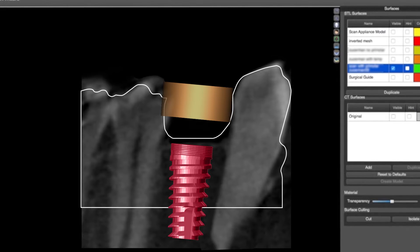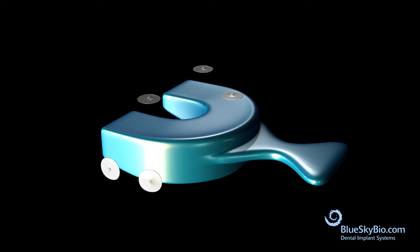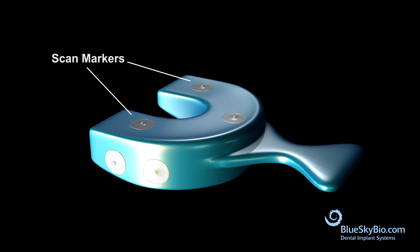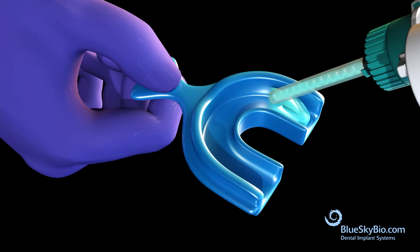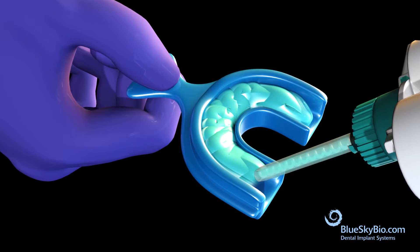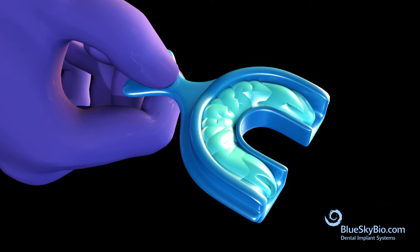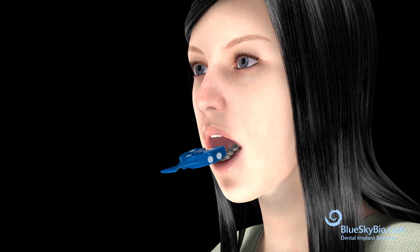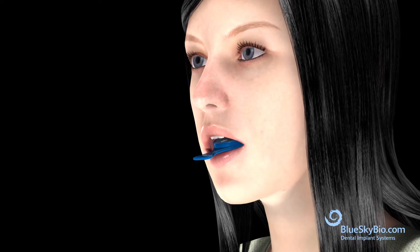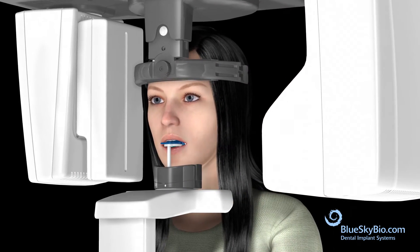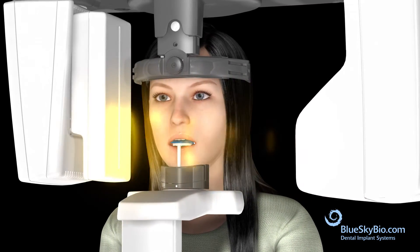Radiopaque skin markers are attached to the outside of an impression tray. The tray is filled with PVS material; ensure that the material fully covers and surrounds the teeth. Take an impression — the teeth should not touch the tray. A CBCT scan is taken of the patient with the impression tray in the mouth.